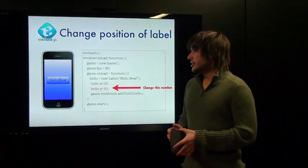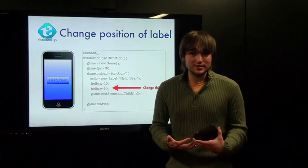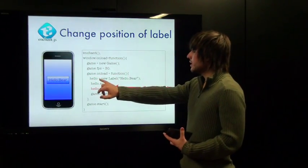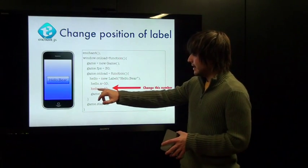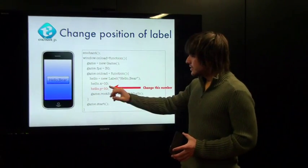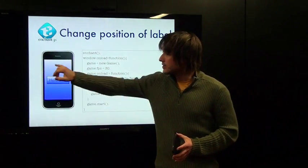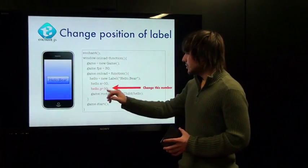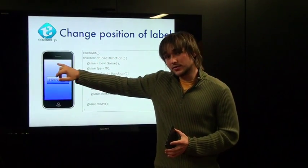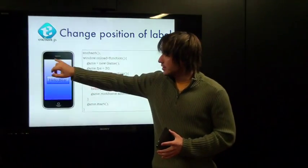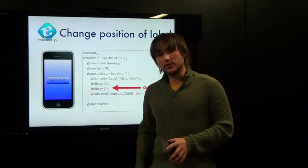Each class in Enchant.js has its own properties. Looking at hello.x and hello.y — those are positions measured from the top-left corner of the screen, which is 0,0. So when we say hello.x equals 10, we're saying create the label 10 pixels over from the top-left corner, and hello.y equals 10 means come down 10 pixels. Then we say rootScene.addChild(hello) and it becomes visible right there.